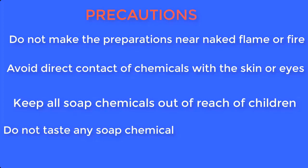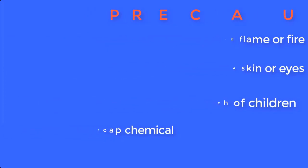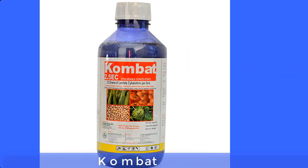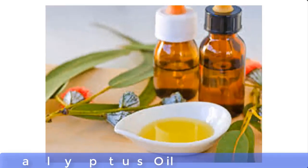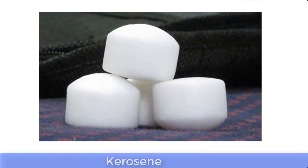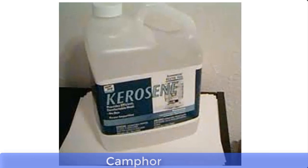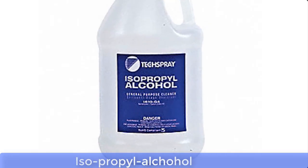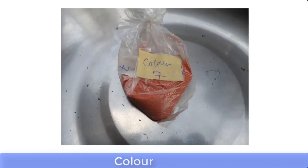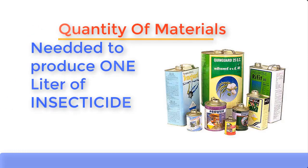Now let's go through the list of materials needed for this production. Number one is compact, number two is eucalyptus oil, number three is camphor, number four is kerosene, and number five is isopropyl alcohol also known as IPA. Number six is color. Please note that the solvent used for this preparation is kerosene.